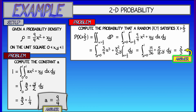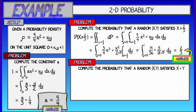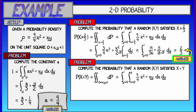This is good — a number between 0 and 1, as it ought to be for probability. Now let's ask: if I pick a random point, what is the probability that the X coordinate is less than the Y coordinate? It's the same integral but over a different domain — the triangular region where X is less than Y. The limits on that double integral are X goes from 0 to Y, and then Y goes from 0 to 1.